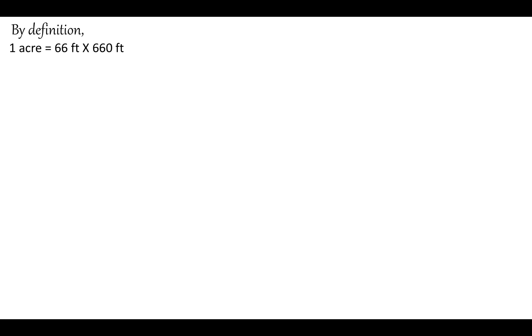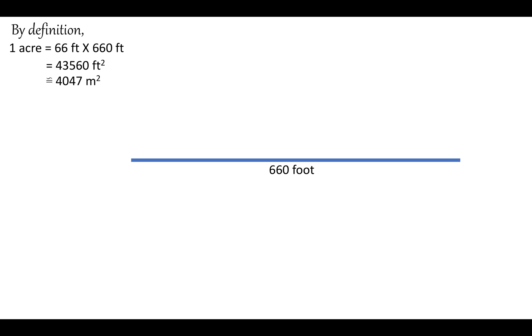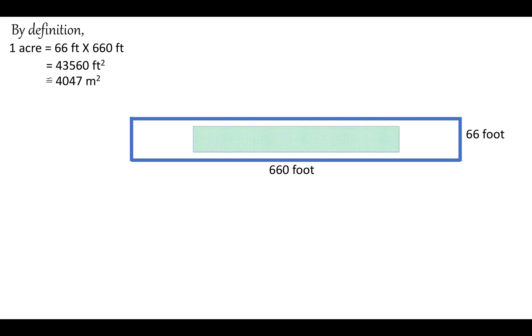Coming to the concept of acre. By definition, one acre is defined as 66 feet by 660 feet, which is 43,560 feet square, and approximately 4,047 meter square. Again taking the help of geometry, we have a rectangle of side 660 foot and 66 foot, and the area of this rectangle is equal to one acre.